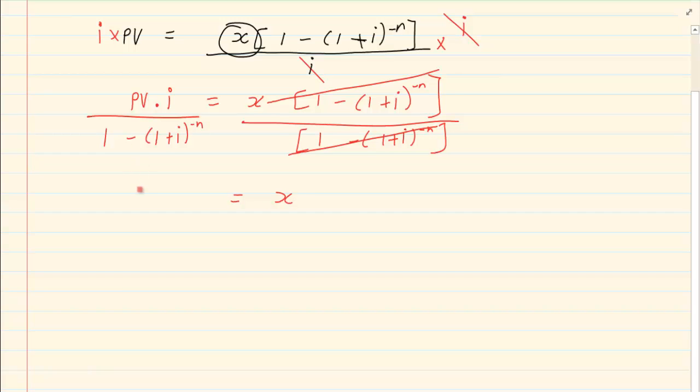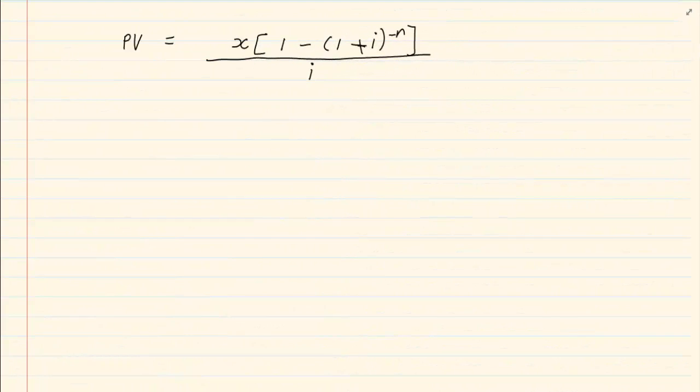So x would equal PV times i all over 1 minus (1 plus i) to the power of minus n.